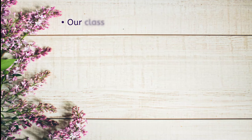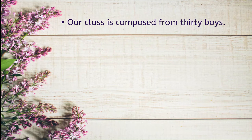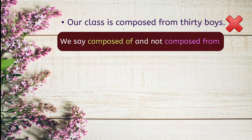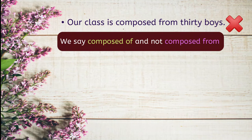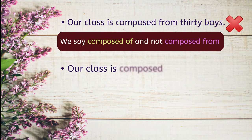The next one is: 'Our class is composed from 30 boys.' It is incorrect. We say 'composed of' and not 'composed from.' Here is the correct sentence — please repeat after me: Our class is composed of 30 boys.